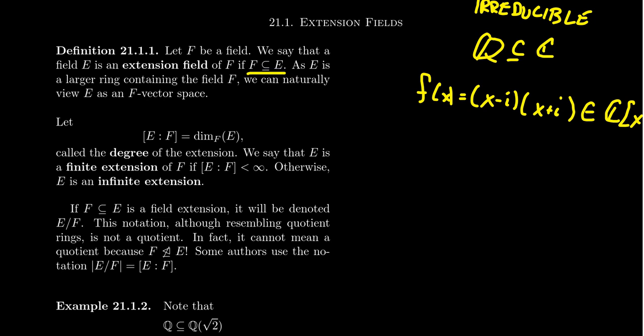Now, like I was mentioning earlier, since E is a field containing the subfield F, that means E is an F vector space. Since E is an F vector space, it has a basis as an F vector space. And that basis has a cardinality and it's well-defined. That would then be the dimension of E as an F vector space. And this is going to be denoted as E colon F, the so-called degree of this extension.